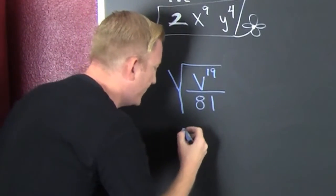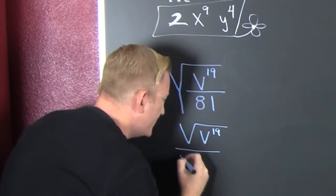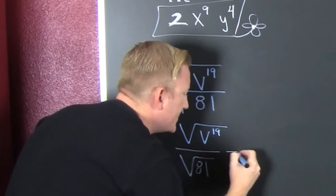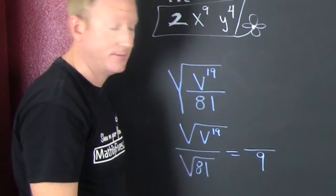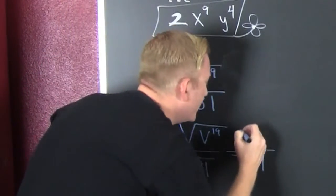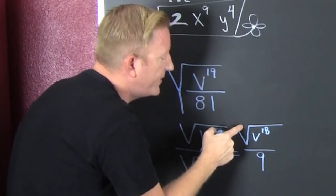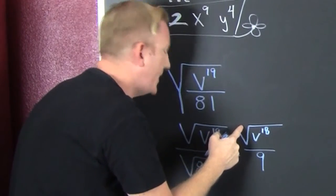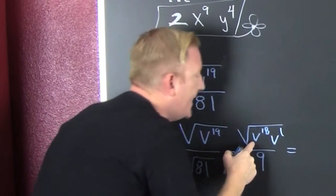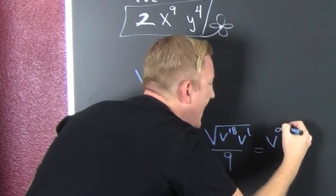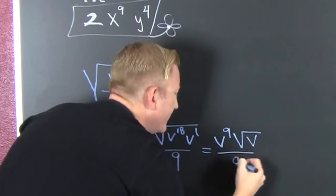The root of a quotient is the quotient of the roots and vice versa. So I get the square root of v to the 19 divided by the square root of 81. The denominator: the square root of 81 is 9, because 9 times 9 is 81. I'm going to break the numerator down to v to the 18 times v to the 1 — looking for the even number, the things divisible by 2. The square root of v to the 18 is v to the 9, since 18 divided by 2 is 9. Then I have a v left in the root. So the result is v to the 9 times the square root of v, all over 9.